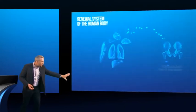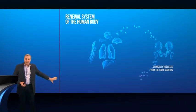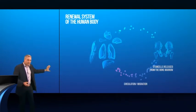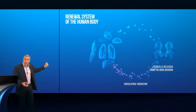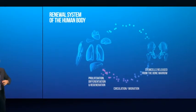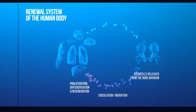So we have the release of stem cells from the bone marrow, their circulation in the bloodstream, their migration into tissue, their proliferation, and then their differentiation in cells of that tissue.